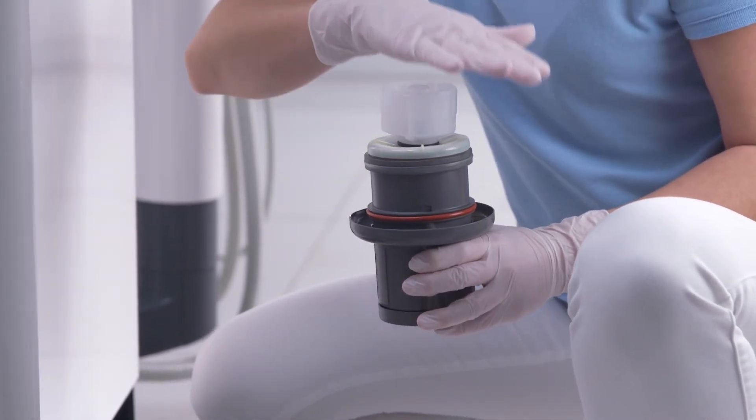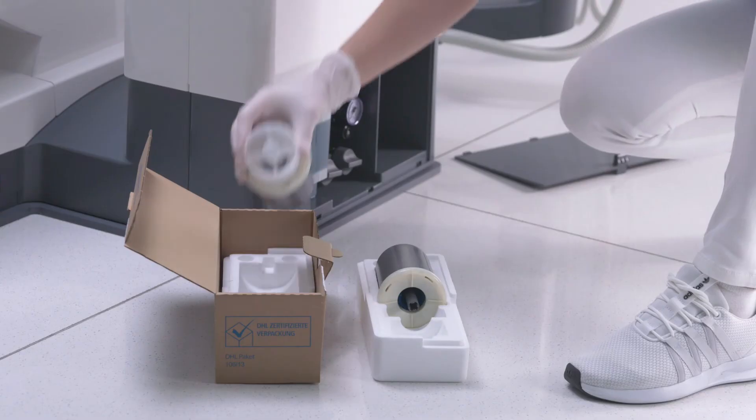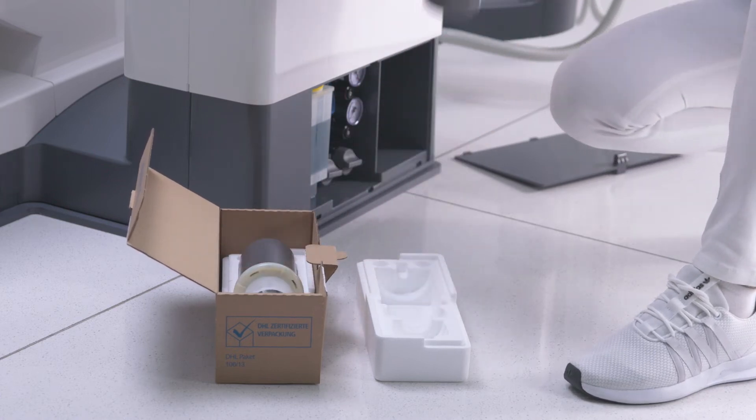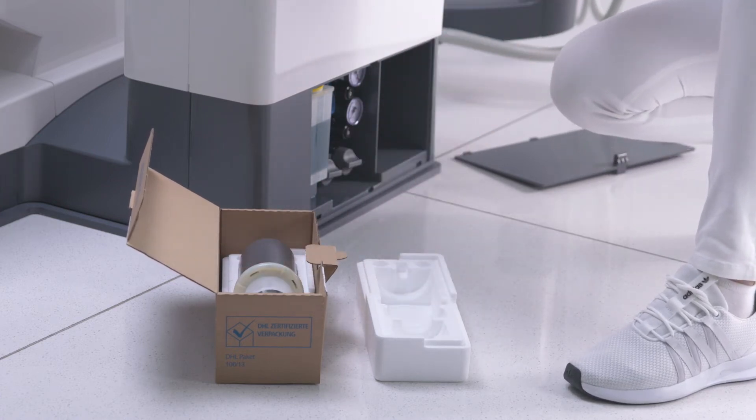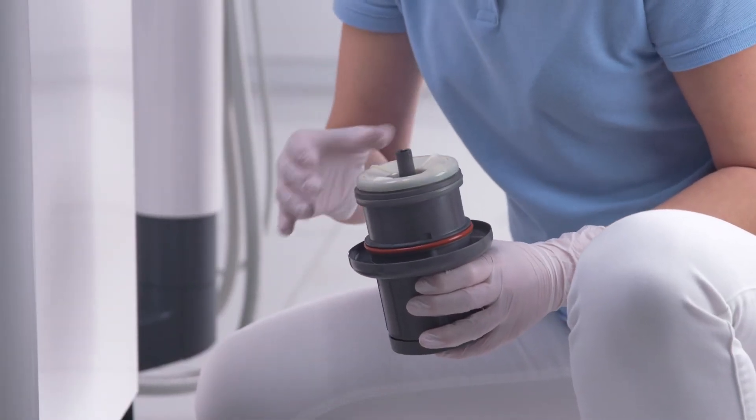Attach the transport cap to the amalgam rotor. Remove the amalgam rotor with the transport cap from the lower part of the amalgam separator. Place the container in the special packaging. Insert the new amalgam rotor in the lower part of the amalgam separator.